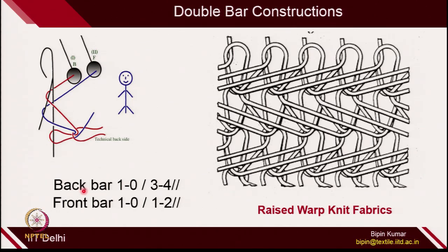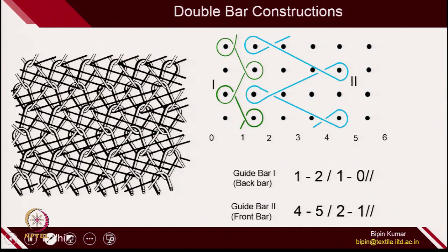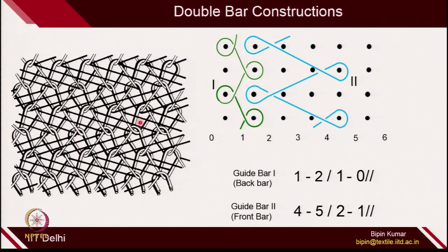For the double bar construction shown: the white color yarn is attached to the back guide bar with underlap of 1 unit, and the black color yarn is attached to the front guide bar with underlap of 3 units. The lapping plan numbers and their sequence are very important in terms of fabric design in warp knit categories. Once the guides have different overlap and underlap movements, it is only possible when those guides are attached to different guide bars.